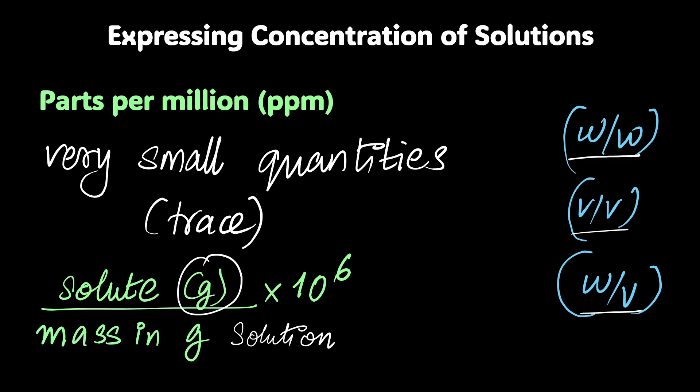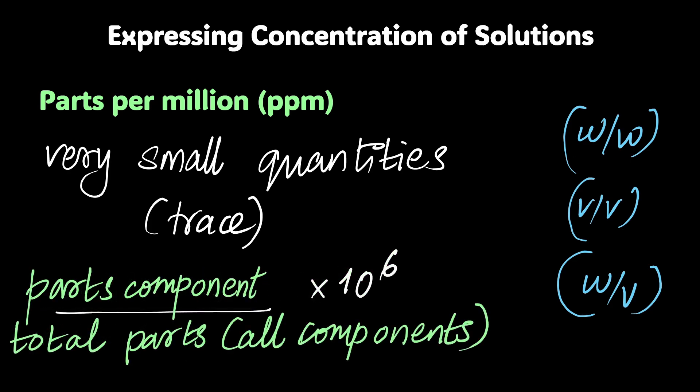Anyway, so to have one uniform definition, this is the one you're going to see the most, is parts of a component divided by total parts of all components, times 10 to the power 6. It's the same thing as before. If I make the generalized form, then it can go to weight by weight, go to v by v, or it can go to w by v.